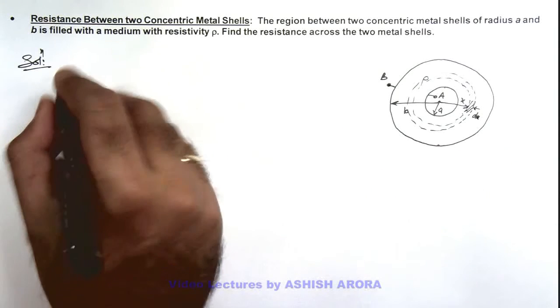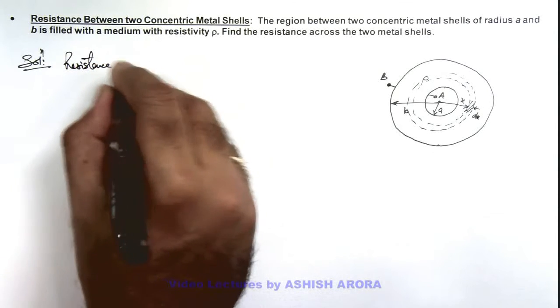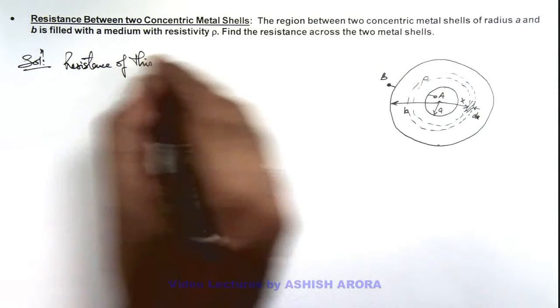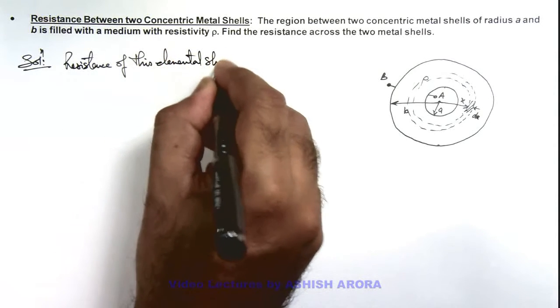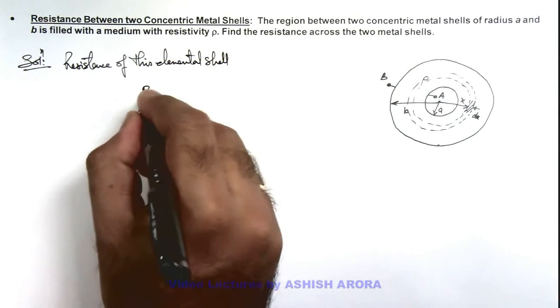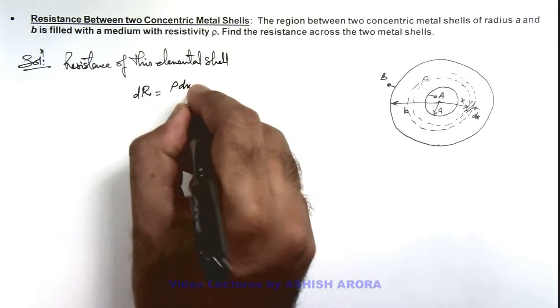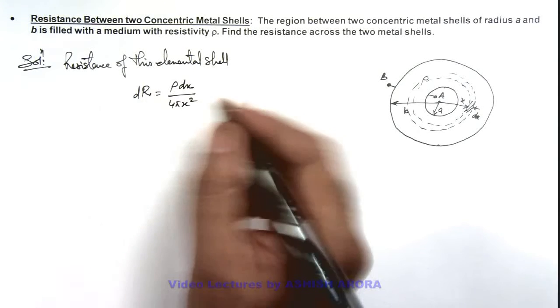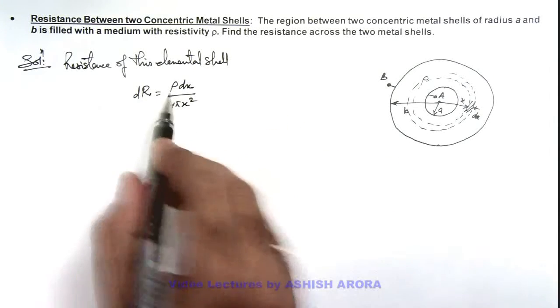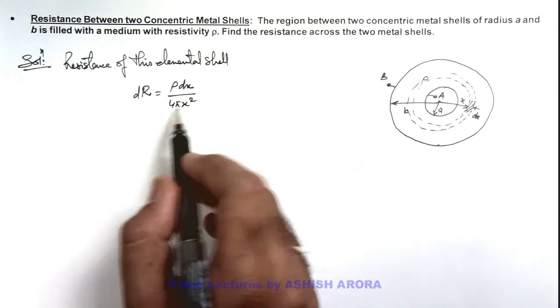Here if we calculate the resistance of this elemental shell, then this resistance we can write as dR, and the value will be ρ dx divided by 4π x² as resistance we take as ρL/A. So here current passes through dx and its cross sectional area will be 4π x².